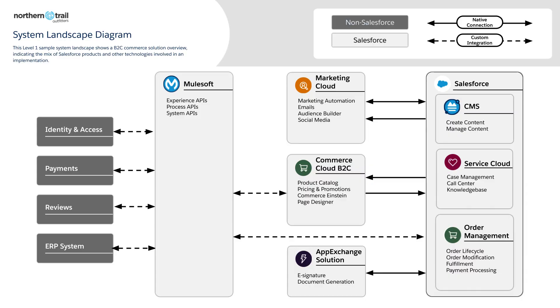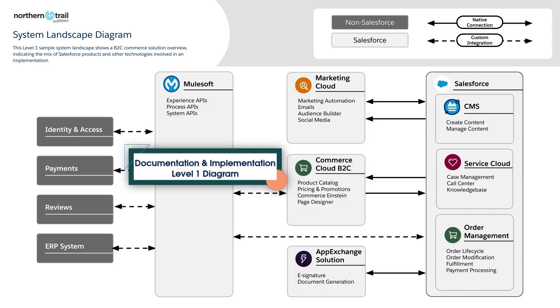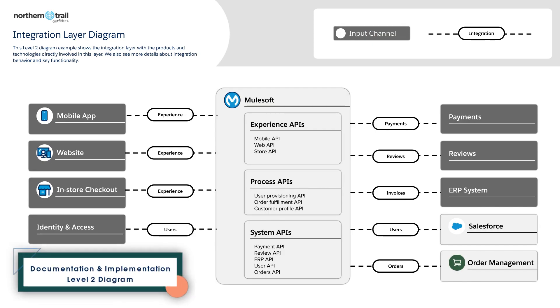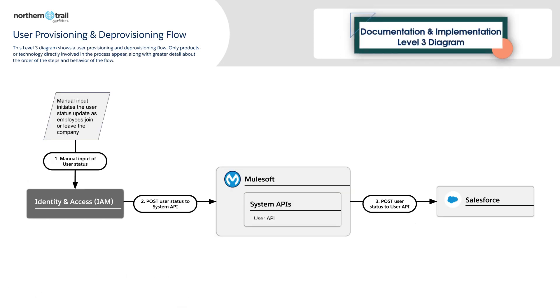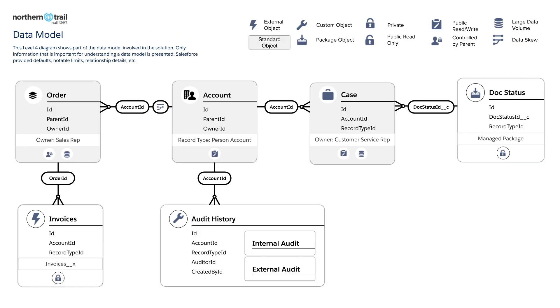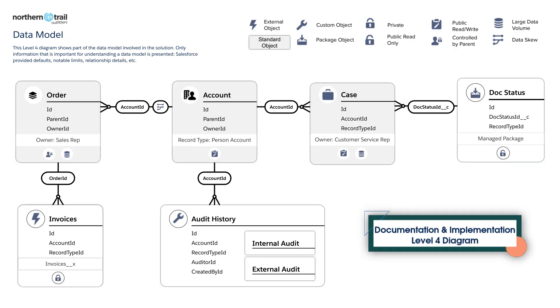The four levels in the Salesforce diagramming framework are the big picture, down to a piece of the whole, to a process or interaction view, and finally the double click. In our example of a system landscape, that would be our level one diagram. A level two diagram might look like just the integrations involved in that system landscape. A level three would show the process of just one of those integrations, and a level four diagram would show the data model that underpins a part of the solution.